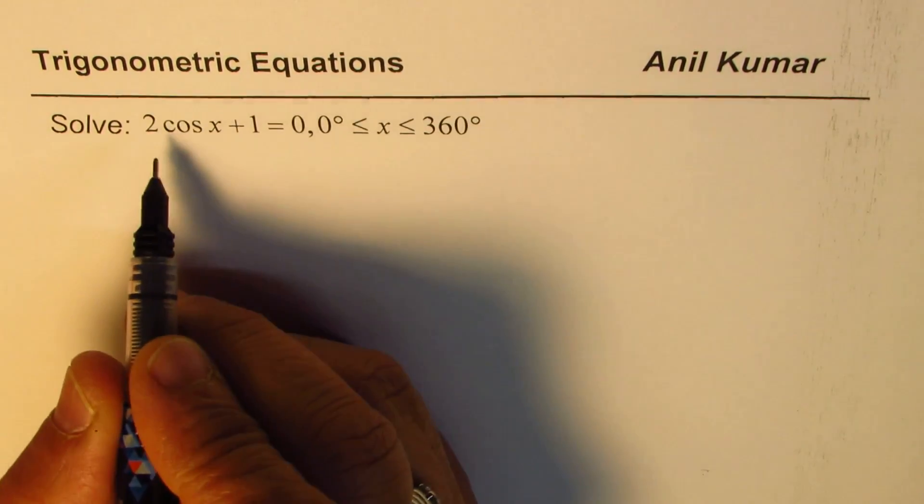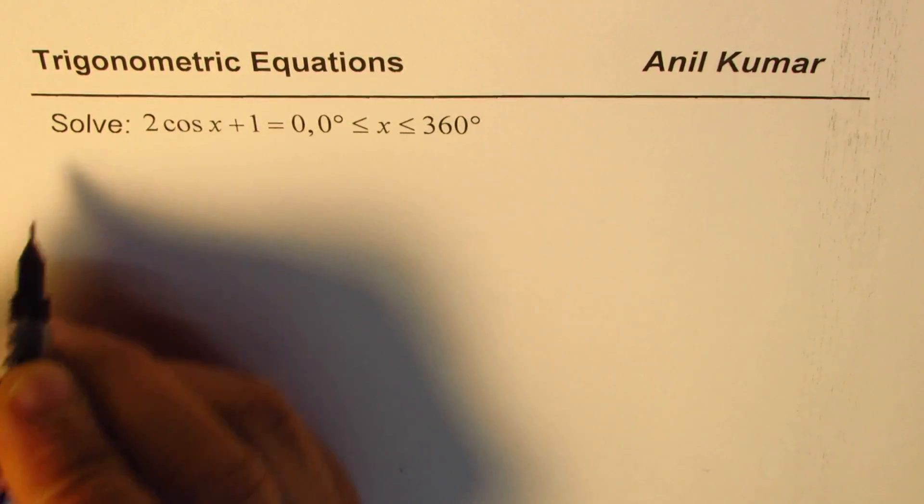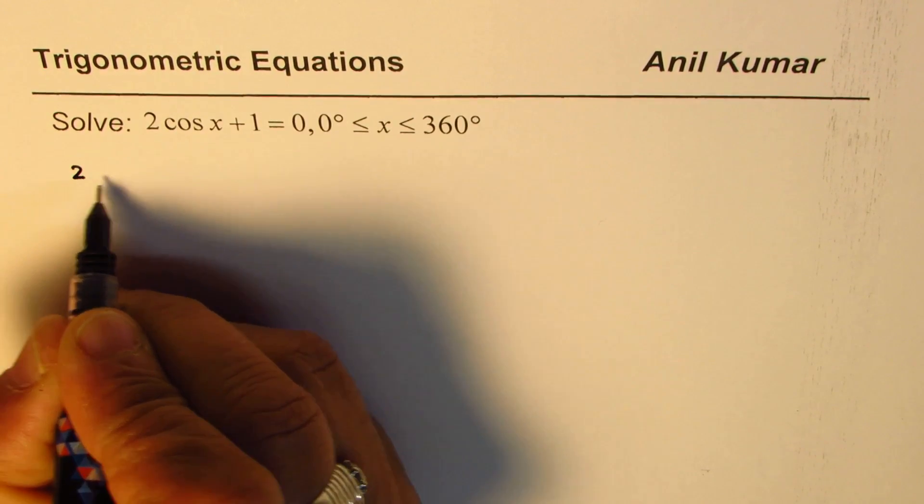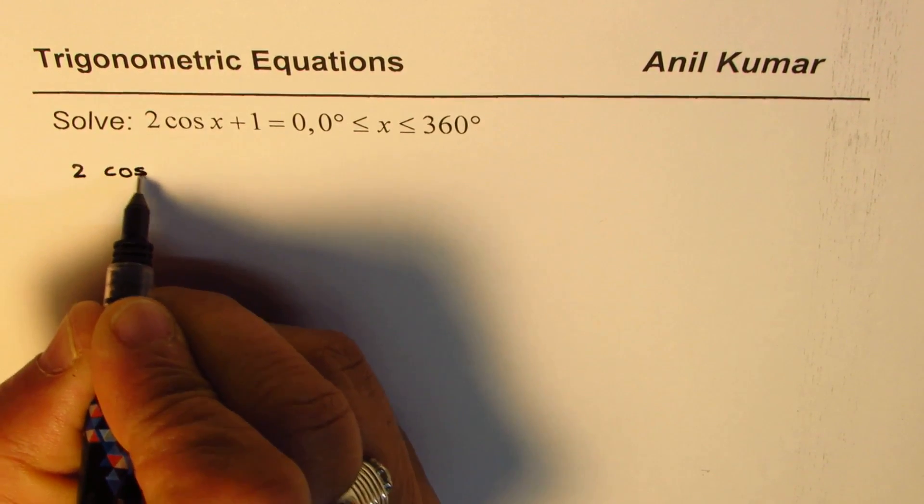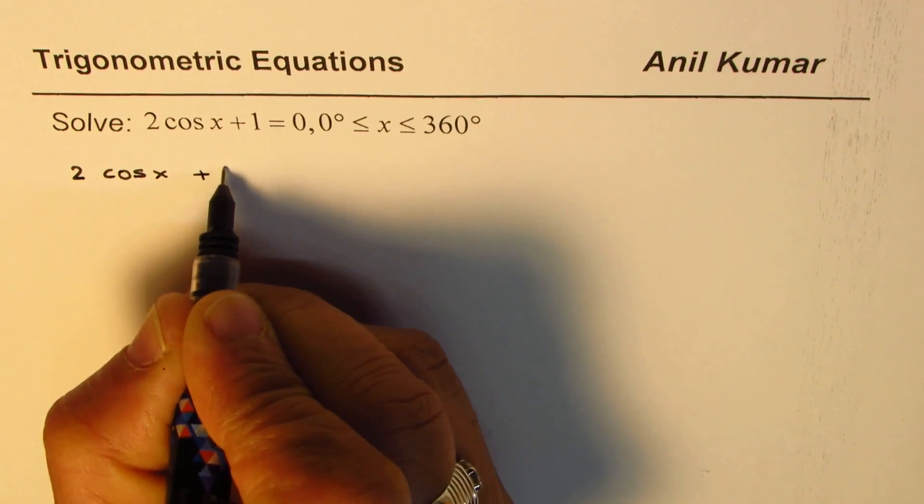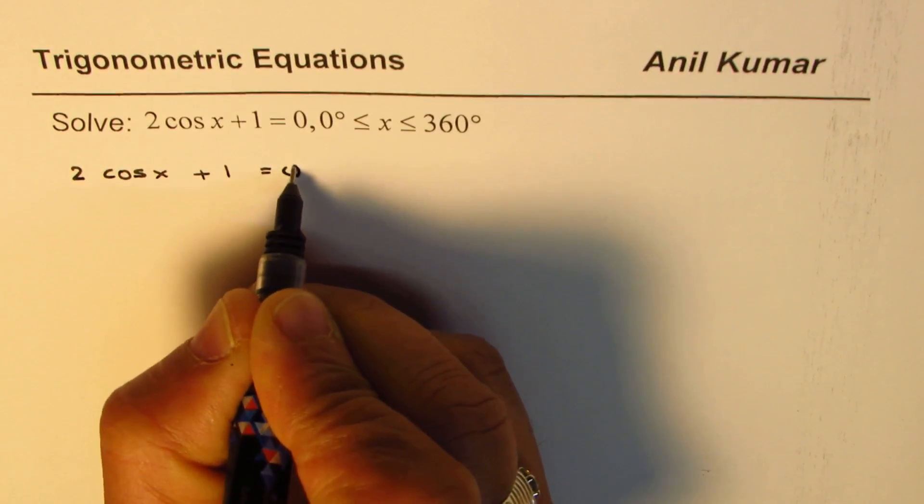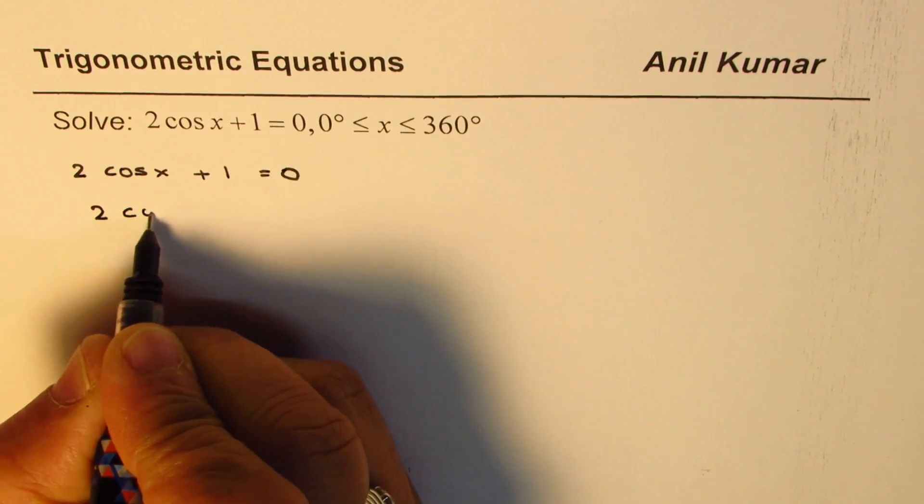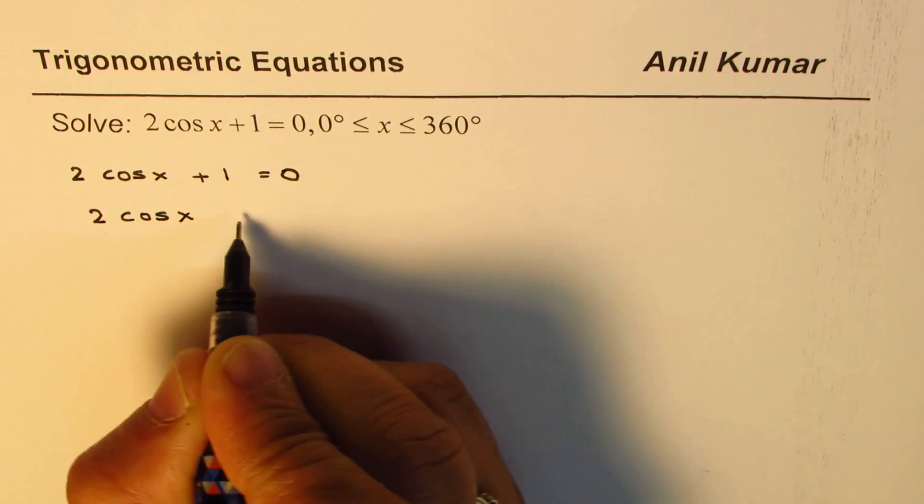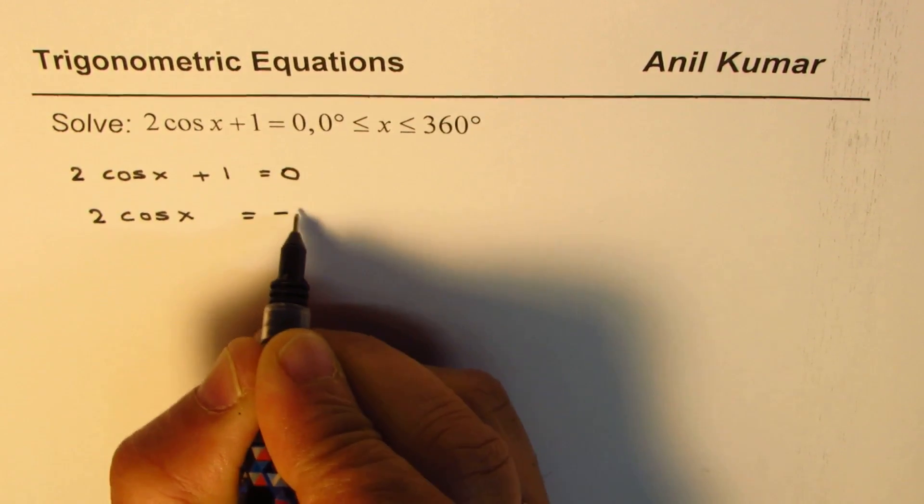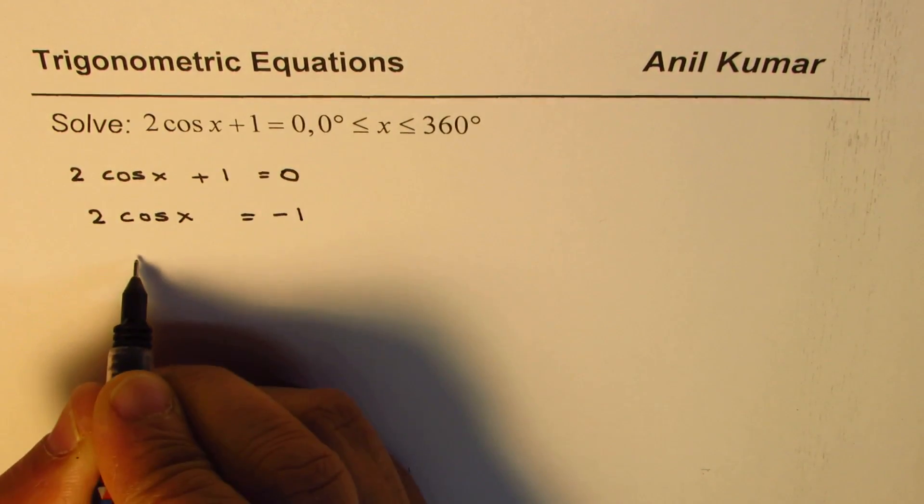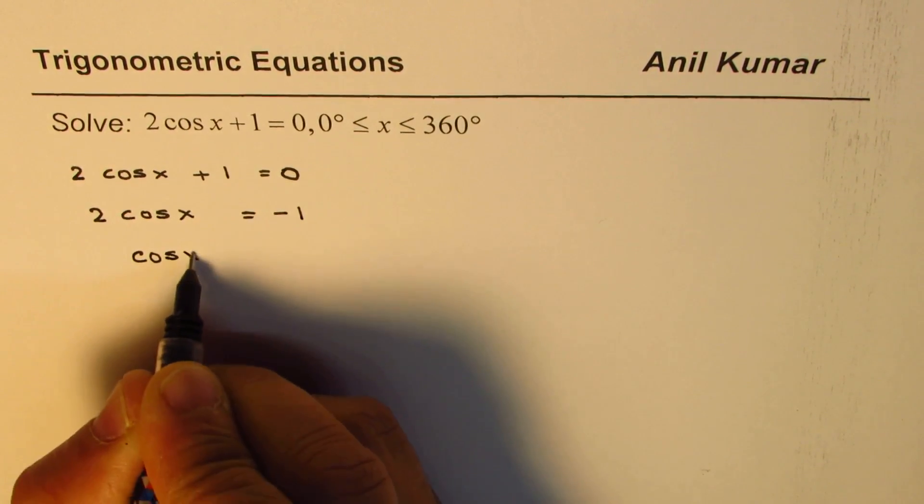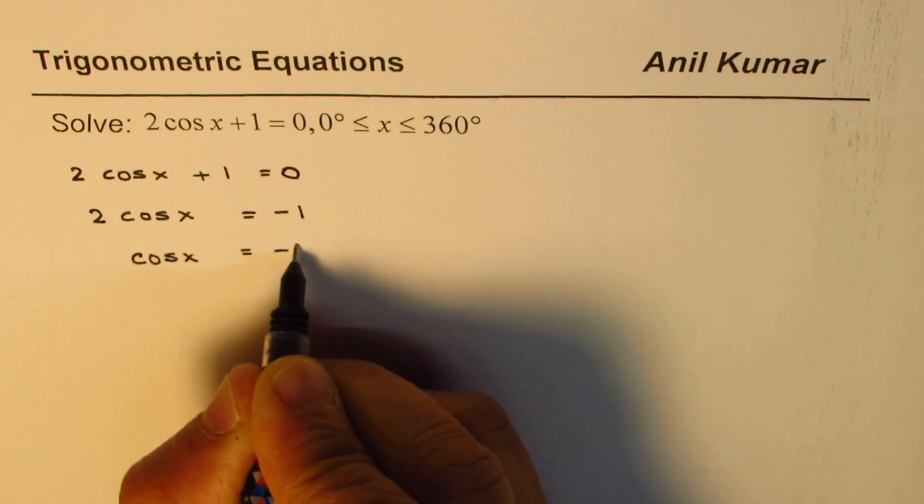It is solved like a normal equation. Let's rewrite this equation: 2 cos x plus 1 equals 0. We could take 1 to the other side that gives us 2 cos x equals minus 1. And dividing by 2 we get cos x equals minus half.